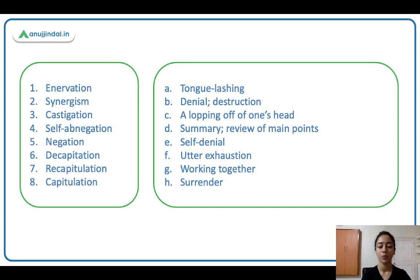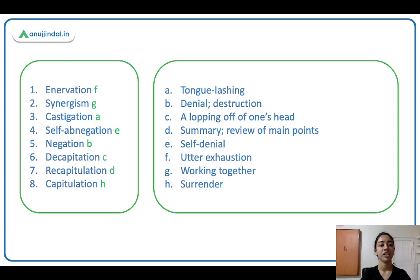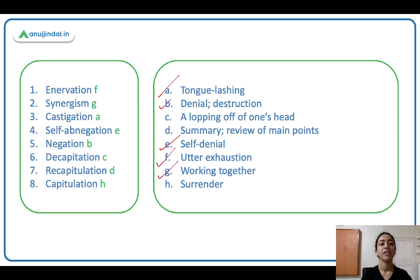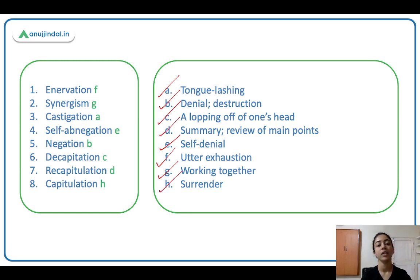Again we have some match the followings, so pause the video and match your answers. Enervation is F — utter exhaustion. Synergism is G — working together, interact, cooperate. Castigation is A — tongue lashing, daantna, scold someone. Self-abnegation is E — self-denial. Negation is B — denial, destruction. Decapitation is C — lopping off someone's head. Recapitulation is D — summary, review of main points. And capitulation is H — surrender, to give up.